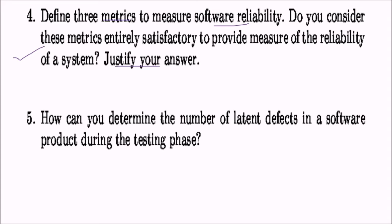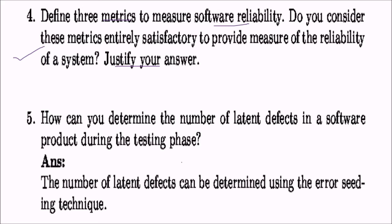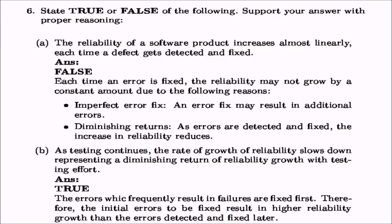How can you determine the number of latent defects in a software product during the testing phase? For that, we use the error seeding technique. The number of latent defects can be determined using error seeding — we seed or plant some errors into the software, say 100 errors, and then find out how many the testing can detect. Say 90 are detected. Using the difference between what was not detected and the amount of errors planted, we can find the number of latent defects with a simple formula.